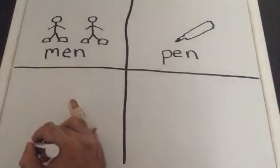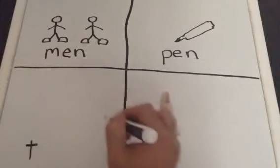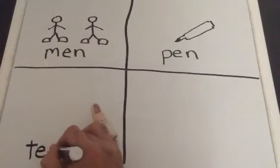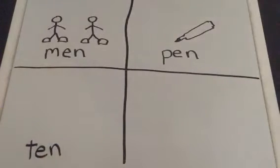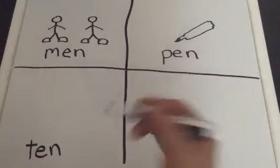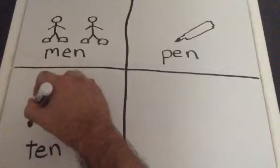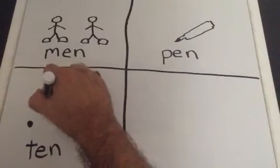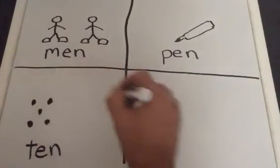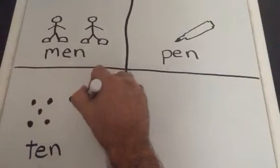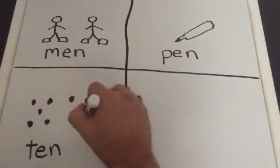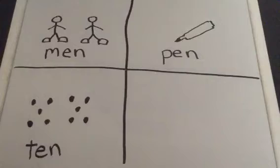Next up, down here, we have ten. Now, ten, we could do a number of different ways. We could draw ten of something, right? Now, for me, just so this video doesn't go on forever and ever, I'm just going to draw ten dots, just like we do it in math. There are ten dots.